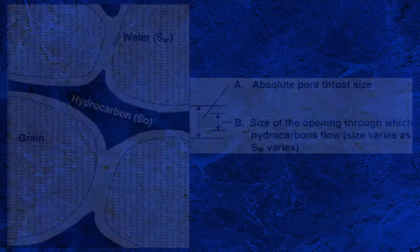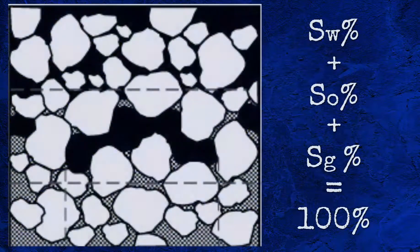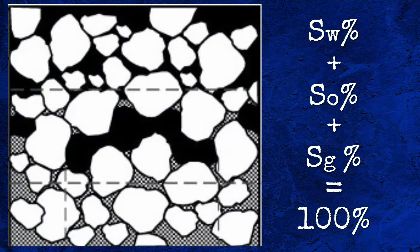To help understand the immiscible nature of these fluids, think of a salad dressing made of oil and vinegar. The relative amount of the hydrocarbon and water sharing the pores of the reservoir will vary from reservoir to reservoir. This is called saturation.